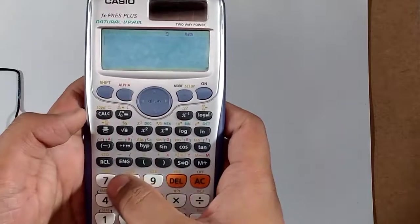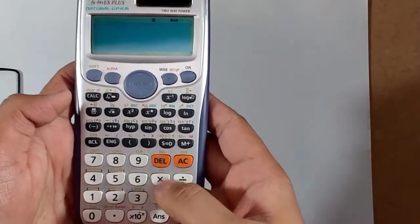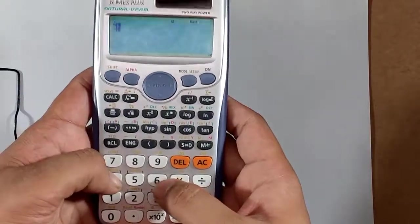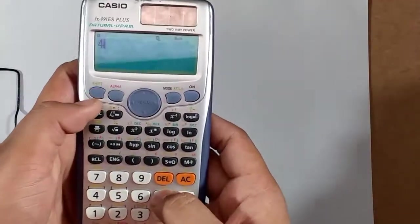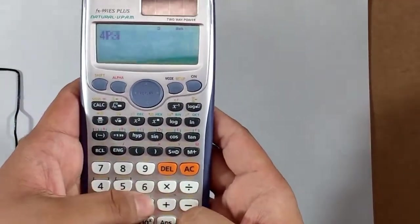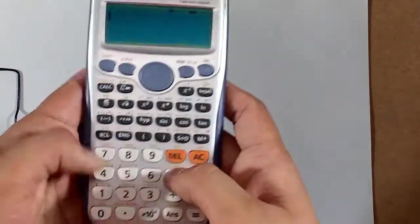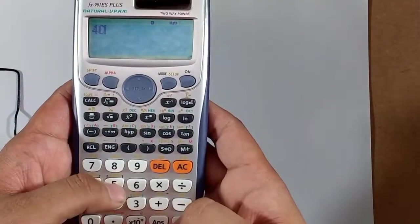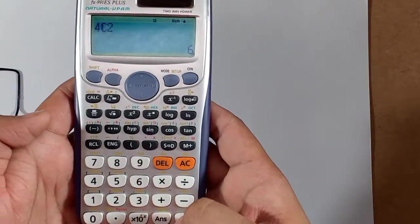Now let us discuss another button. This is the nPr permutation and this is the combination button. Like 4 shift P 3, that's 24, and 4C2, that's 6.